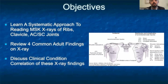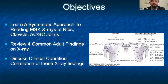The objective of this presentation is to learn a systematic approach to reading musculoskeletal x-rays of the ribs, clavicle, and the acromioclavicular and sternoclavicular joints. We'll review four common adult findings on x-ray and discuss clinical correlation of these x-ray findings.